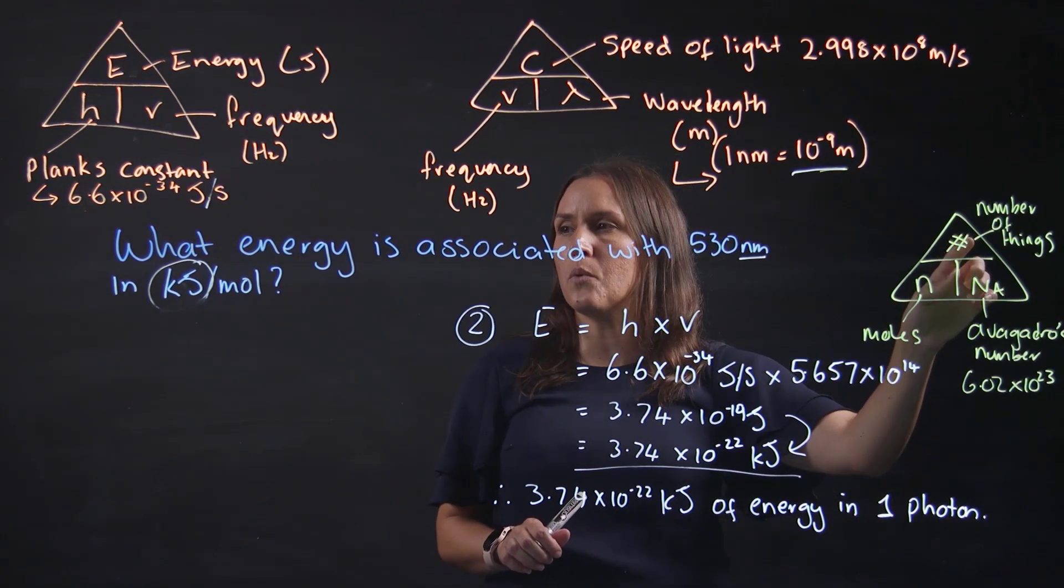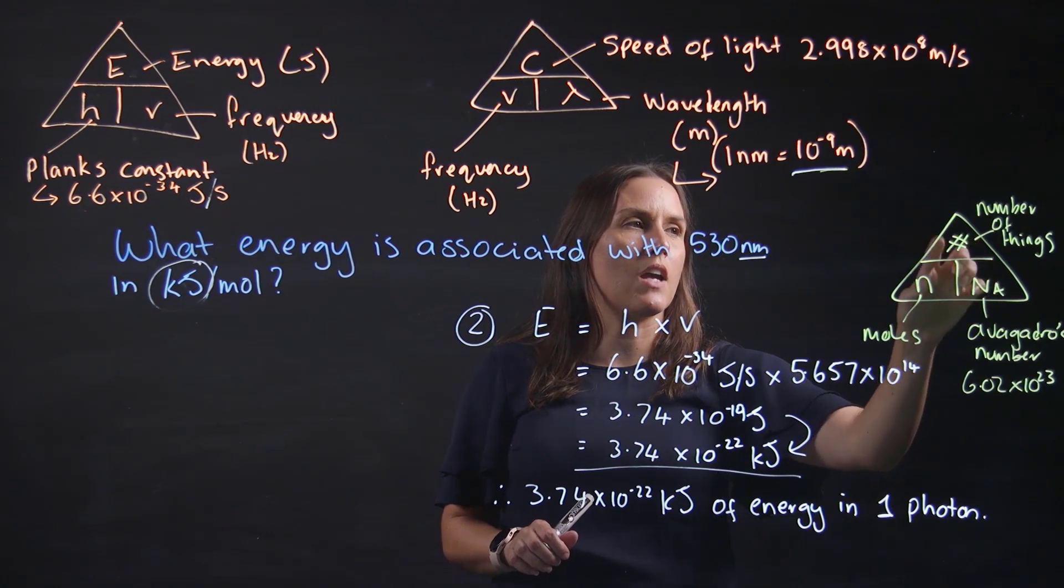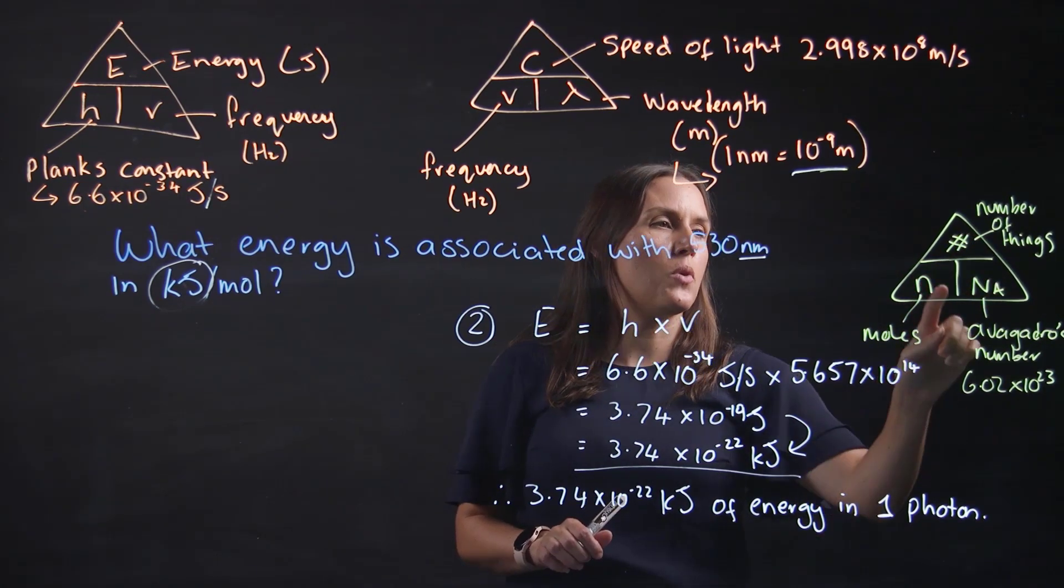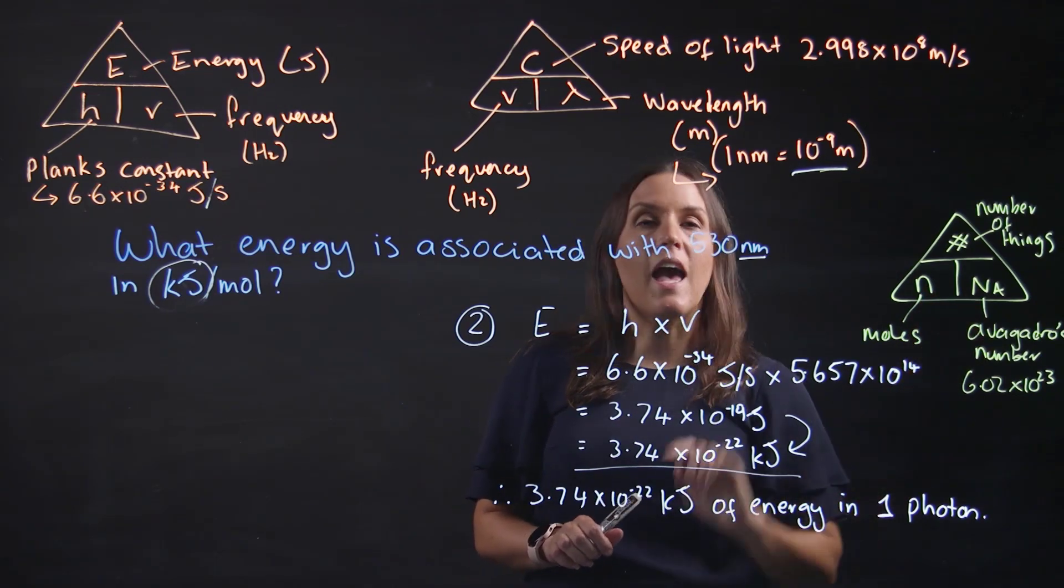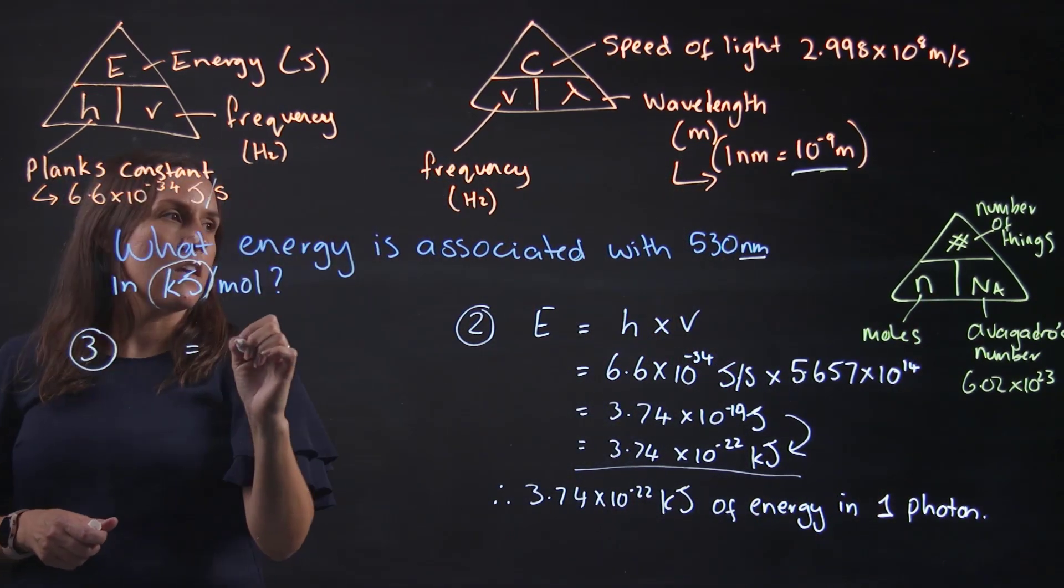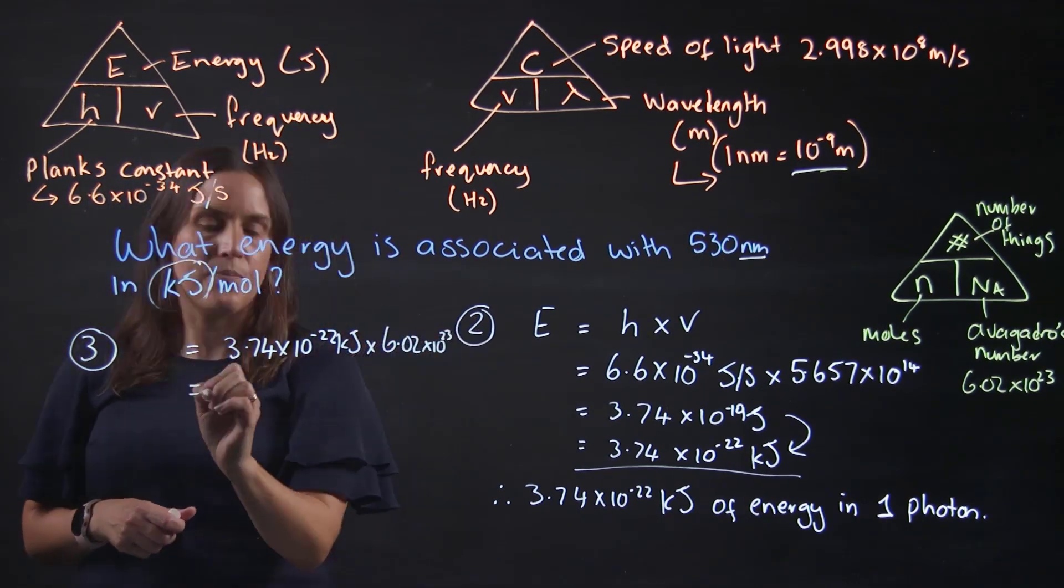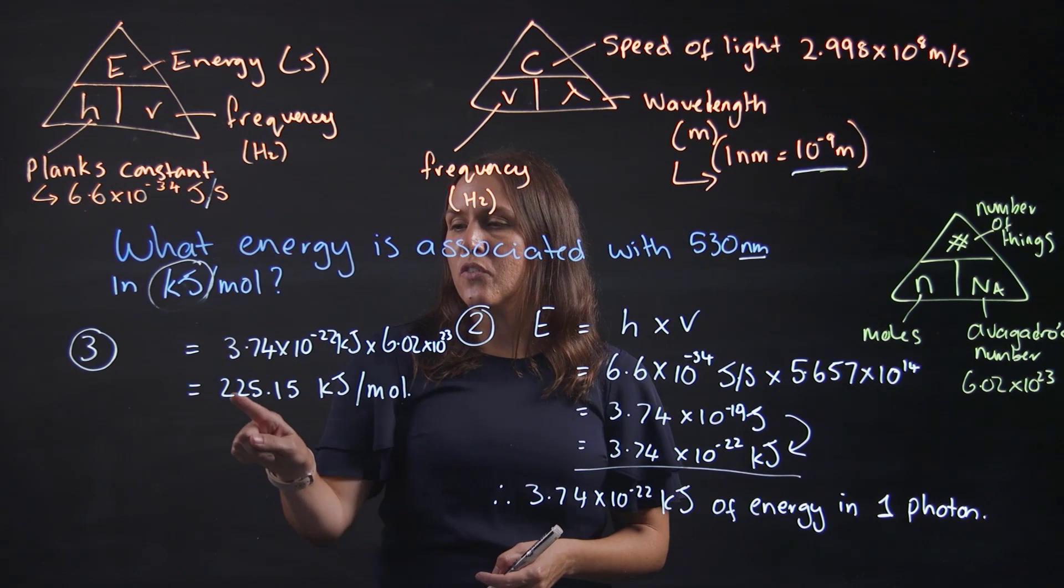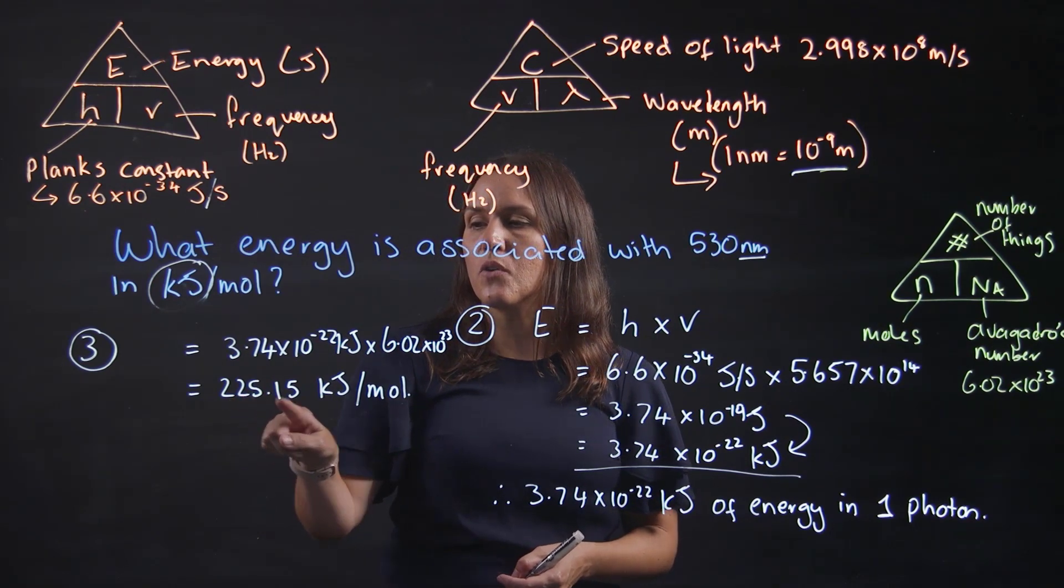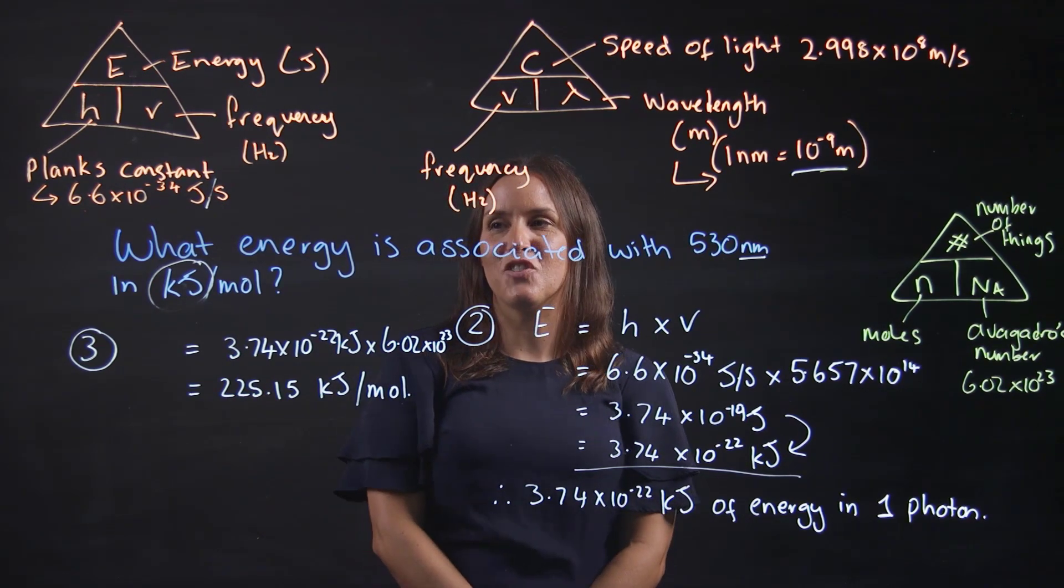So we want it in kilojoules, how many kilojoules per one mole. We will be multiplying the value that we've got by Avogadro's number. So to convert it into per mole, we've got 225.15 kilojoules per mole.